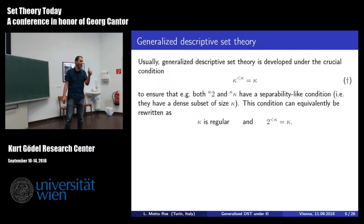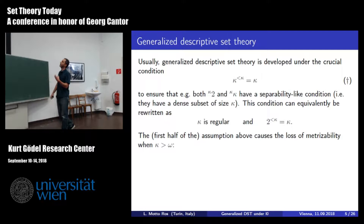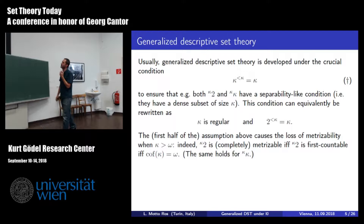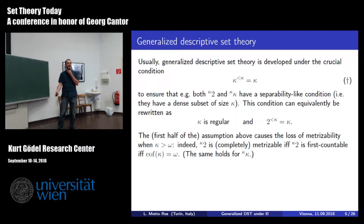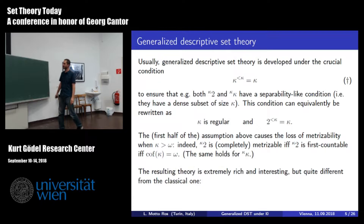This condition can be rewritten as the conjunction of two items: first, kappa is regular; and secondly, 2^{<kappa} = kappa. Regularity is what makes you lose metrizability, because these spaces are metrizable—in fact completely metrizable—if and only if they are first countable, which happens if and only if the cofinality of kappa is omega. So if kappa must be uncountable but you want metrizability, you cannot have kappa regular. When you have kappa regular, you immediately rule out metrizability.